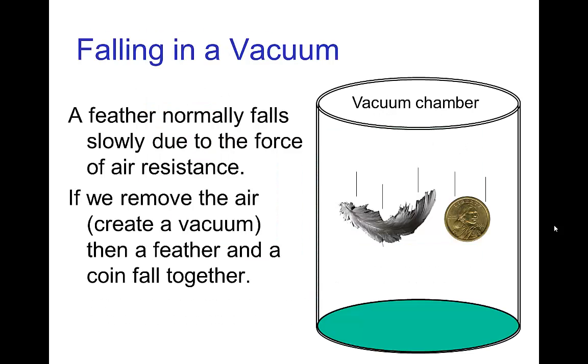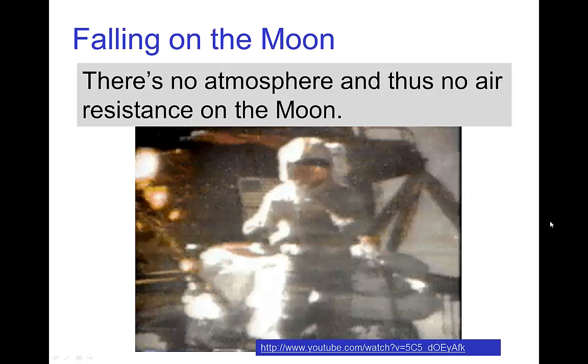We normally think of a feather falling slowly, and we understand that it's not so much because of its weight, but because there is a significant force of air resistance on a feather. If we do the classic experiment of placing a feather and a coin in a vacuum chamber and dropping them together, you would see that the feather and the coin fall at the same speed. Another way of demonstrating the same thing is to find a place where there is no atmosphere - a good candidate would be the moon. Let's look at this clip from one of the Apollo missions.